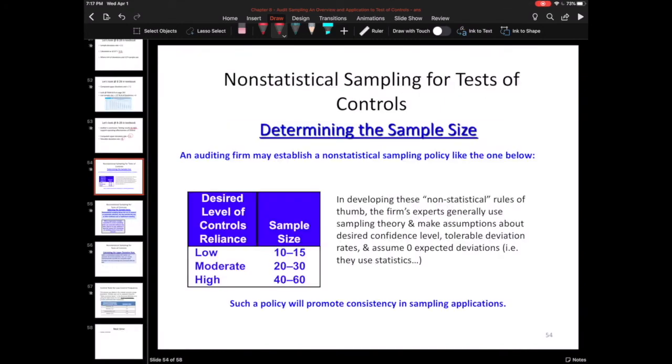So now we just have a quick slide on non-statistical sampling, which is interesting because we spend all this time talking about statistical sampling for test of controls when in fact I so rarely in practice ever did statistical sampling for test controls. It was all non-statistical. So you'll see firms for purposes of consistency across audits might establish a non-statistical sampling policy like this. So if they want moderate level of reliance on the control, they'll go for this sample size. If they want a high level of reliance, I'll try to go for 40 to 60.